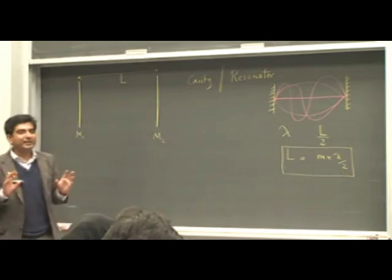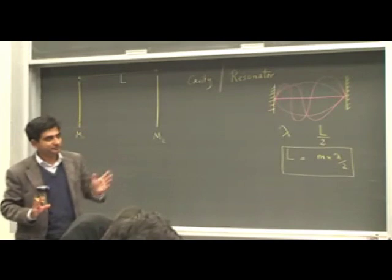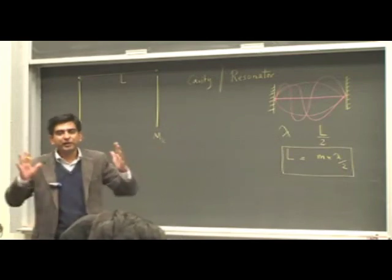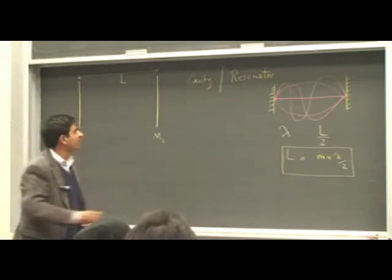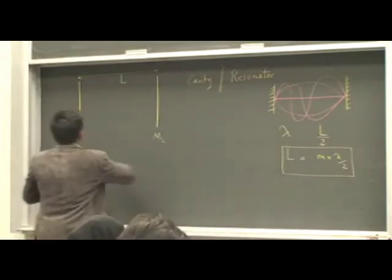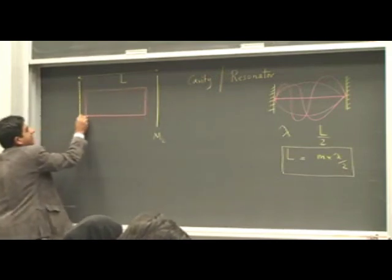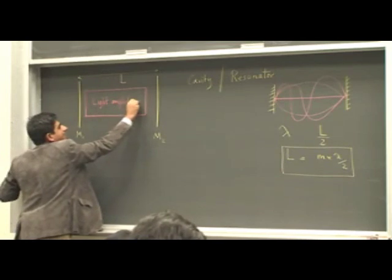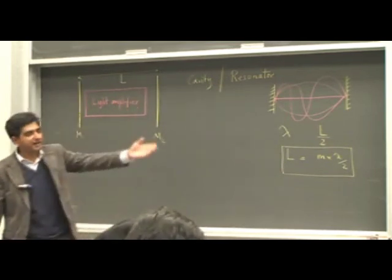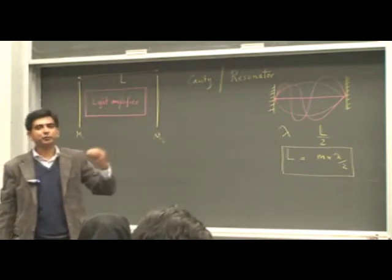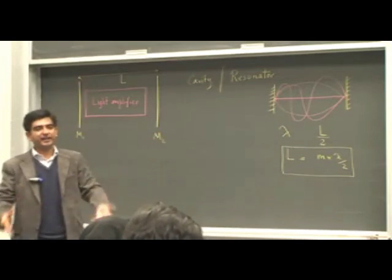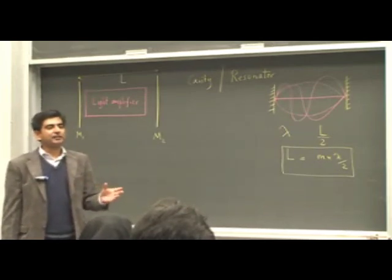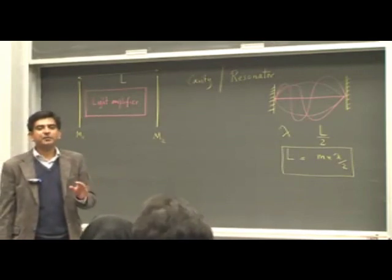But inside this cavity, we need to place a light amplifier. And the light amplifier is simply the atoms out of which we want to make lasing action possible. So in between this cavity, inside this cavity, we place some light amplifier. The light amplifier are simply collections of atoms which have the three level structure or the four level structure. Ruby is a light amplifier. Helium-neon mixture is a light amplifier. Neodymium-YAG is a light amplifier. Titanium-sapphire is a light amplifier.